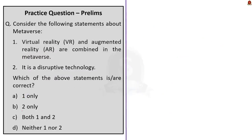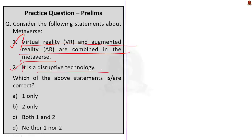Now look at this question about Metaverse. Statement 1 — virtual reality and augmented reality are combined in the Metaverse. This is correct, as we saw in our discussion. Statement 2 — it is a disruptive technology. This is also correct — disruptive technology is an innovation that significantly alters the way consumers, industries or businesses operate, and Metaverse applications have already widened and altered many business operations. The correct answer is Option C: both 1 and 2.